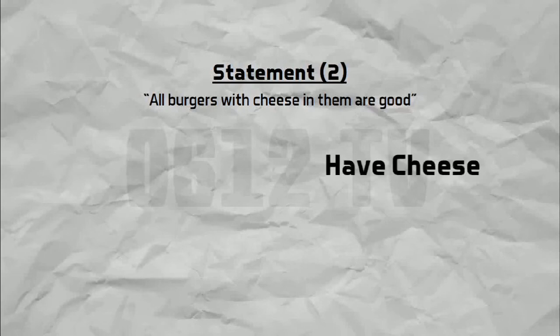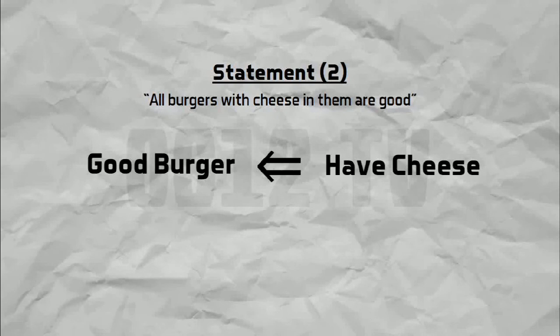The other statement is where things are a little bit different. In fact, the entire relation is flipped on its head. Having cheese in the burger implies that it is a good burger. So we realize that the implication sign in the middle of the statement has been flipped the other way around.